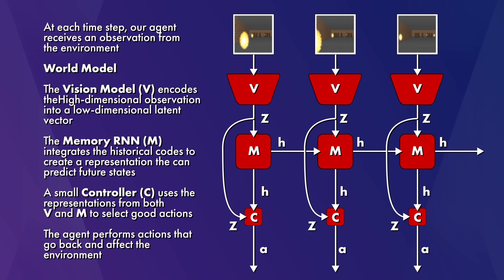Lastly, the controller model was fed the representation from both V and M and selects good actions based on that. Let's look into how each of these components work.